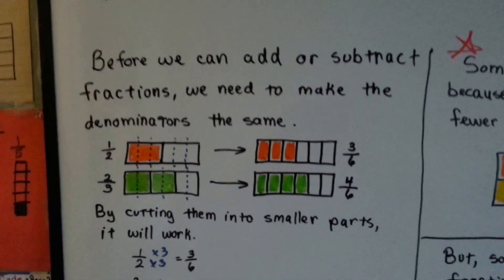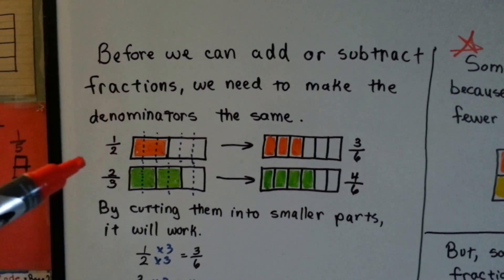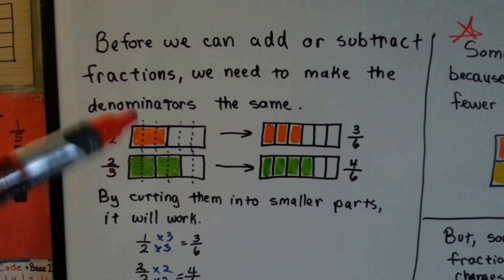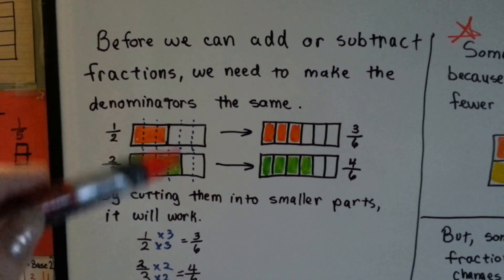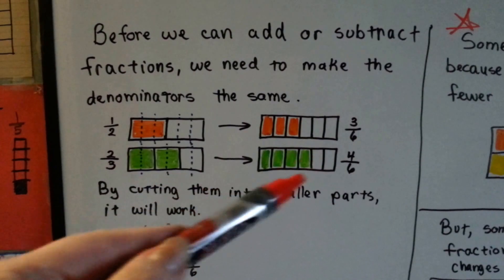All right, I showed you this before. When we add or subtract fractions, we need to make the denominators the same, and the way we do it is by adding lines to create more parts. We cut them into smaller parts, and we can make them have the same denominator, the same amount of parts.